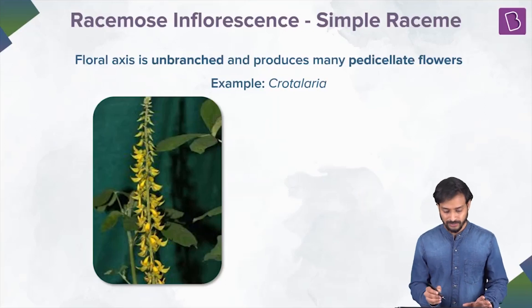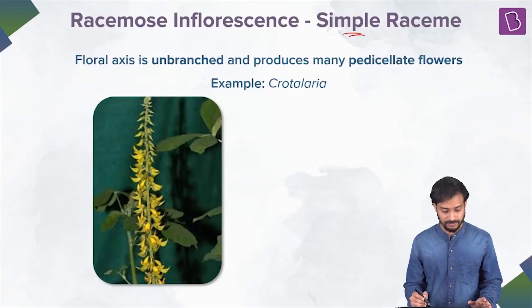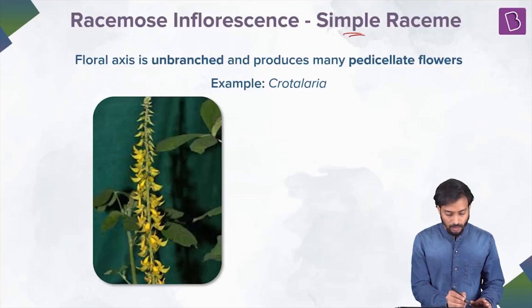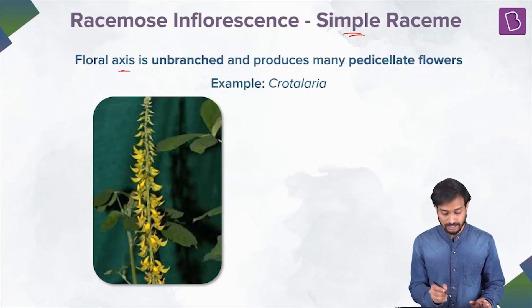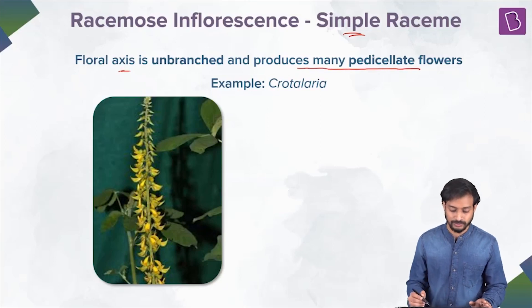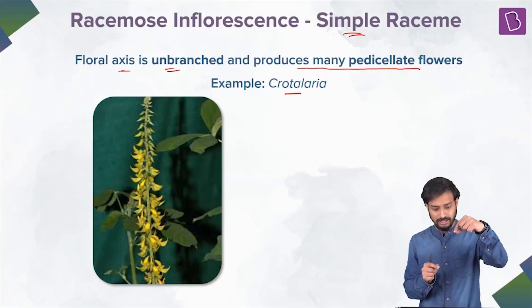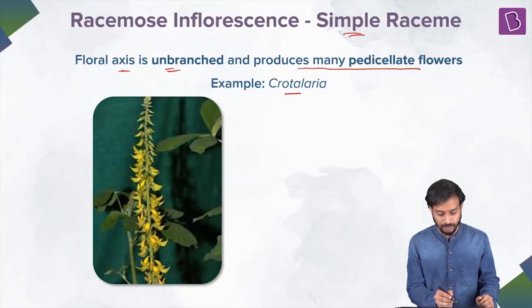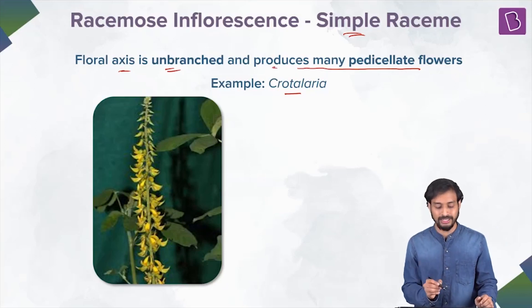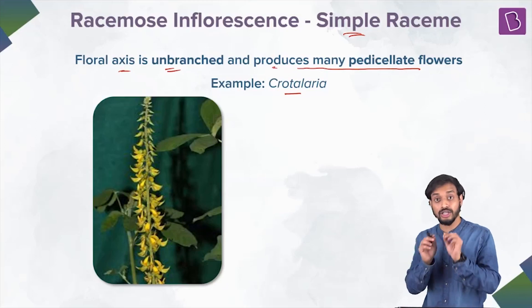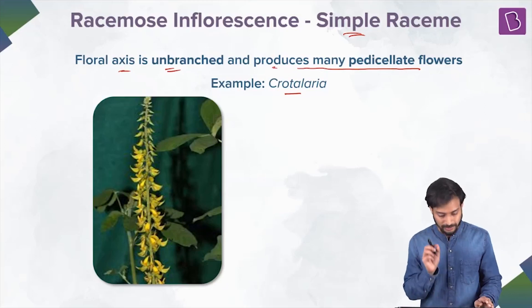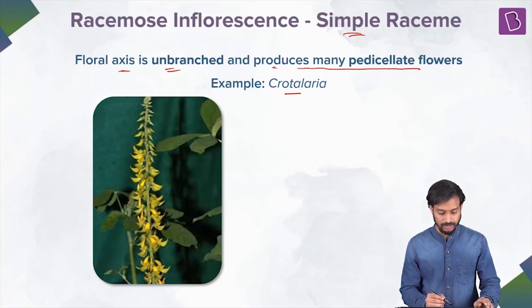One type is the simple raceme, where the floral axis is unbranched and produces many pedicellate flowers. An example is Crotalaria. You can see the floral axis is a single unbranched structure, and the yellow flowers you see are all pedicellate flowers — they have a pedicel.